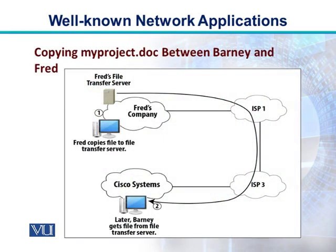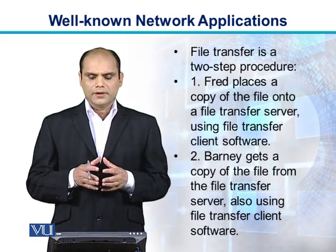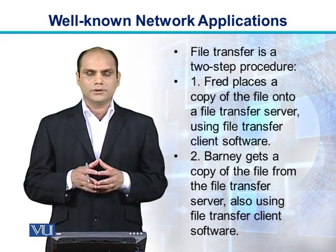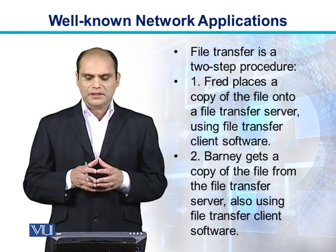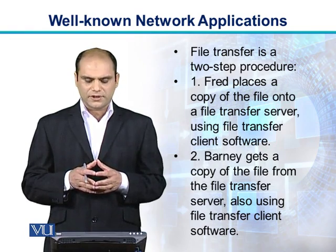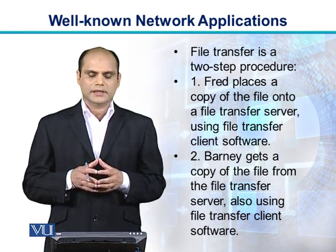In this diagram, we can see Fred wants to copy a file — myproject.doc — between himself and Barney. Fred copies it to Fred's file transfer server, which then copies it over ISP1 and ISP3, and later Barney gets the file from the file transfer server. File transfer is a two-step procedure: Fred places a copy of the file onto a file transfer server using file transfer client software, and Barney then retrieves a copy of the file from the file transfer server, also using file transfer client software.